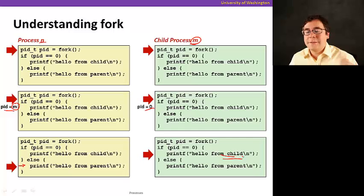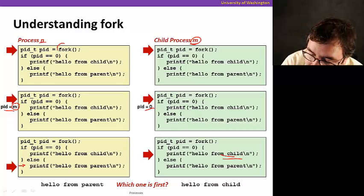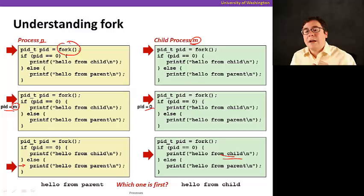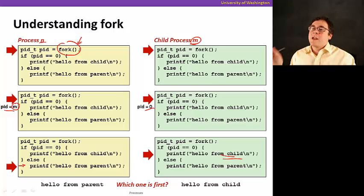And this one's going to execute this one, so we're going to see hello from child. Pretty cool, isn't it? So which one is first? Well, we definitely know that this fork here executed before anything else. But which one is first? Well, as soon as the child process is created, it could be anything. It's non-deterministic, really.